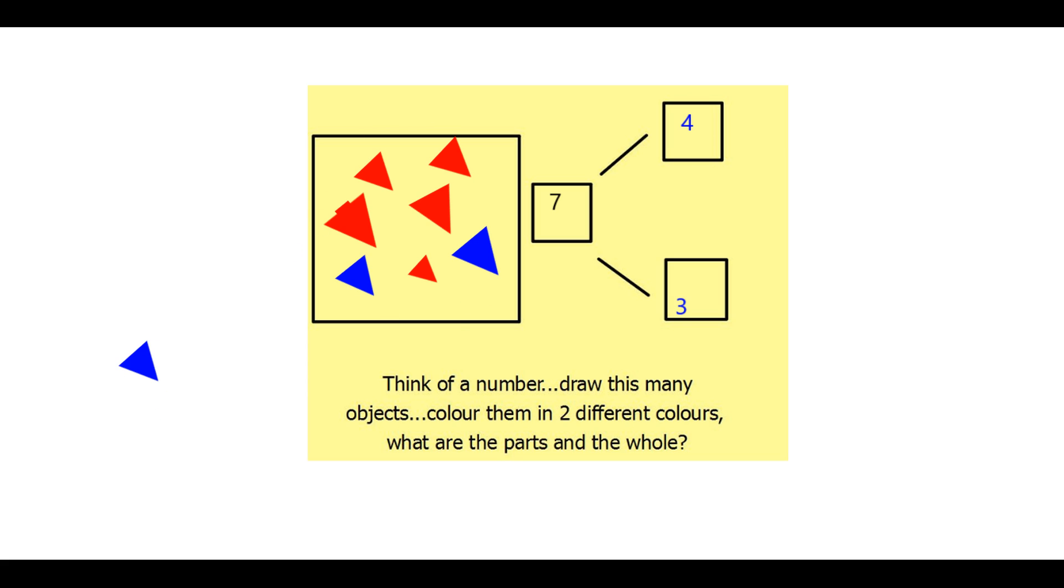If you ignore this triangle over here, the whole is still seven. But this time it's a part of five red triangles. And this time it's two blue triangles.